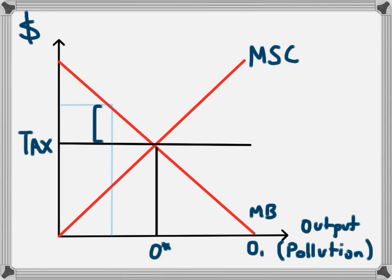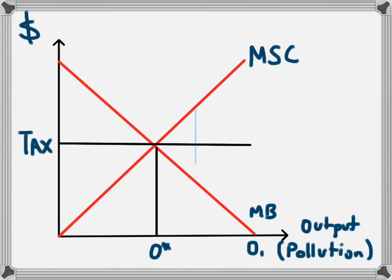So the business will produce that output and pay the corresponding amount of tax, receiving the remaining benefit. When we get to the O* level, that's where the business will end up producing. As they move beyond that point, the benefit they receive is lower than the tax they need to pay — the tax is greater than the benefit. So there's no point producing beyond that level, because they'll actually pay more money to the government than they receive from producing that extra output.